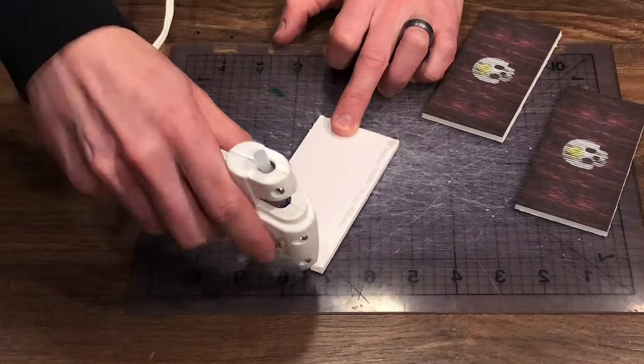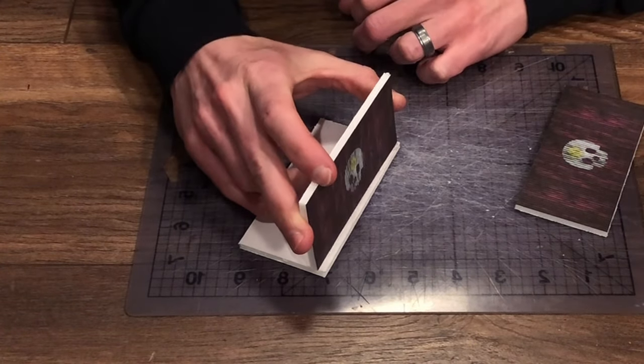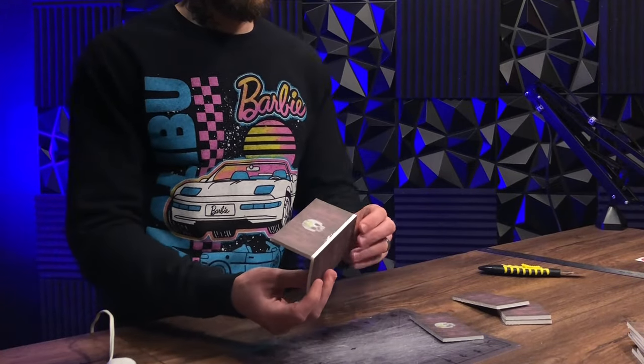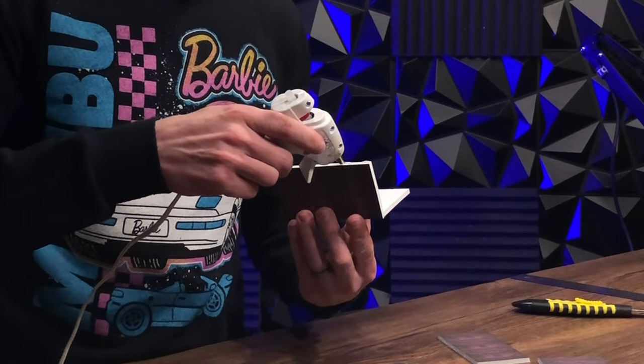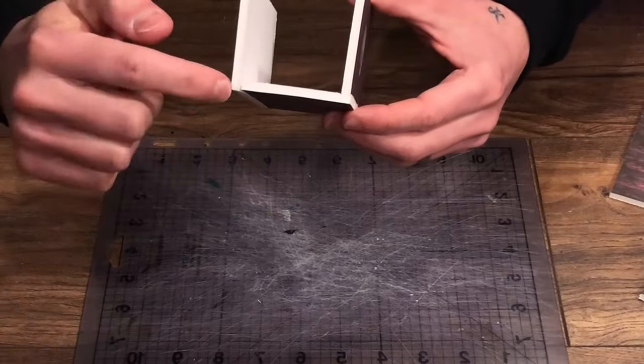When gluing these, let's say you have this bottom piece here, I'm going to glue one of the sides on top of the bottom and then on the facing side I'm going to glue that piece to the side of the bottom, on top on this side and on the side on this side.